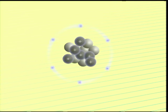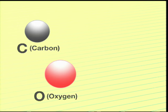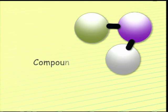A few elements exist in pure form, such as carbon and oxygen. However, most elements are unstable and are usually found combined with other elements in the form of compounds.